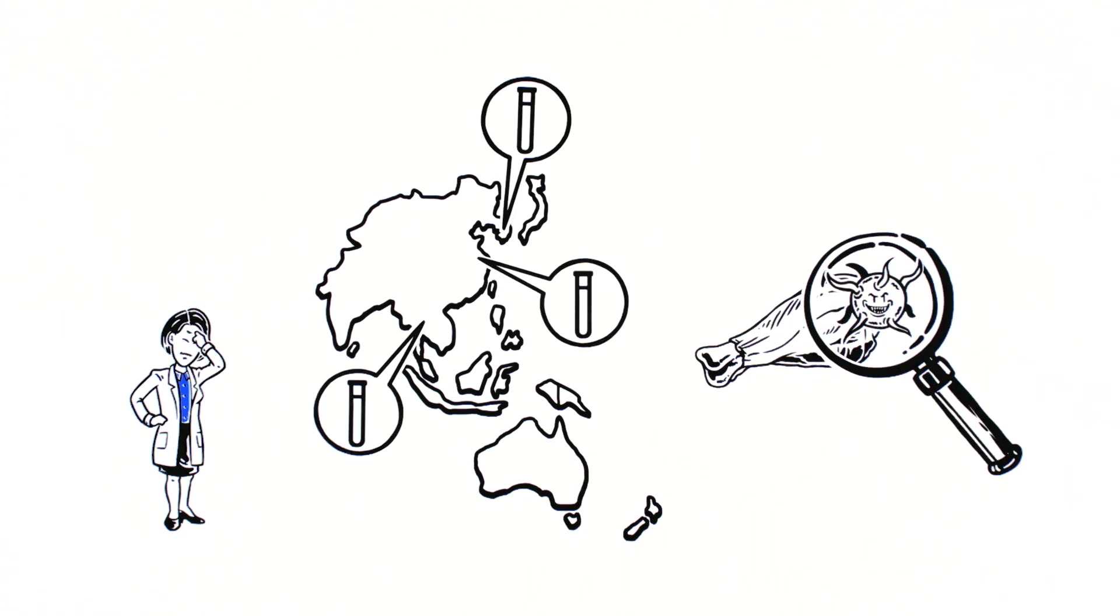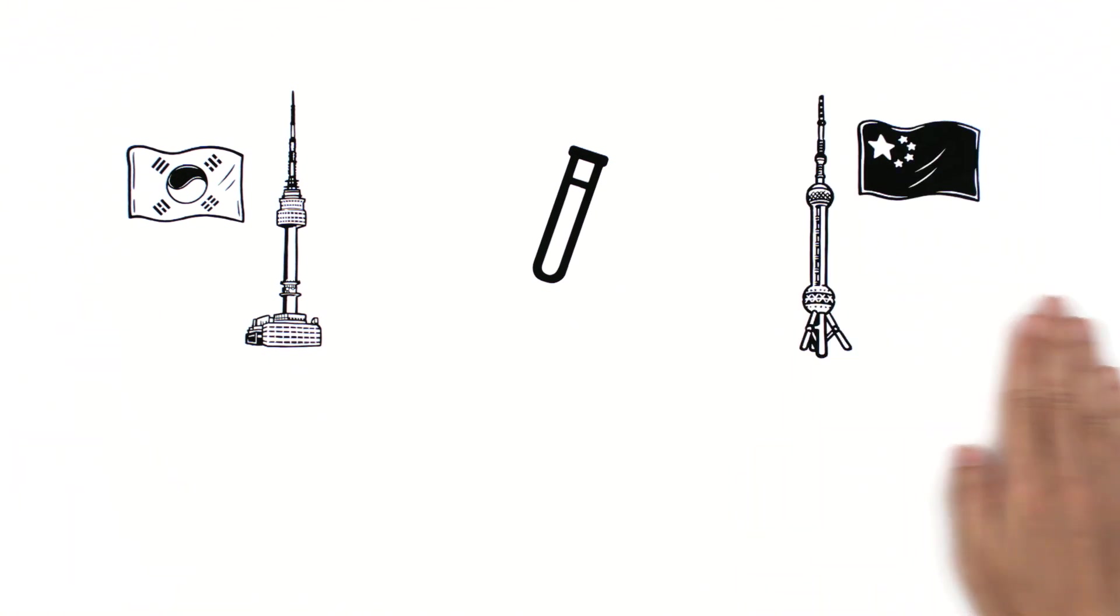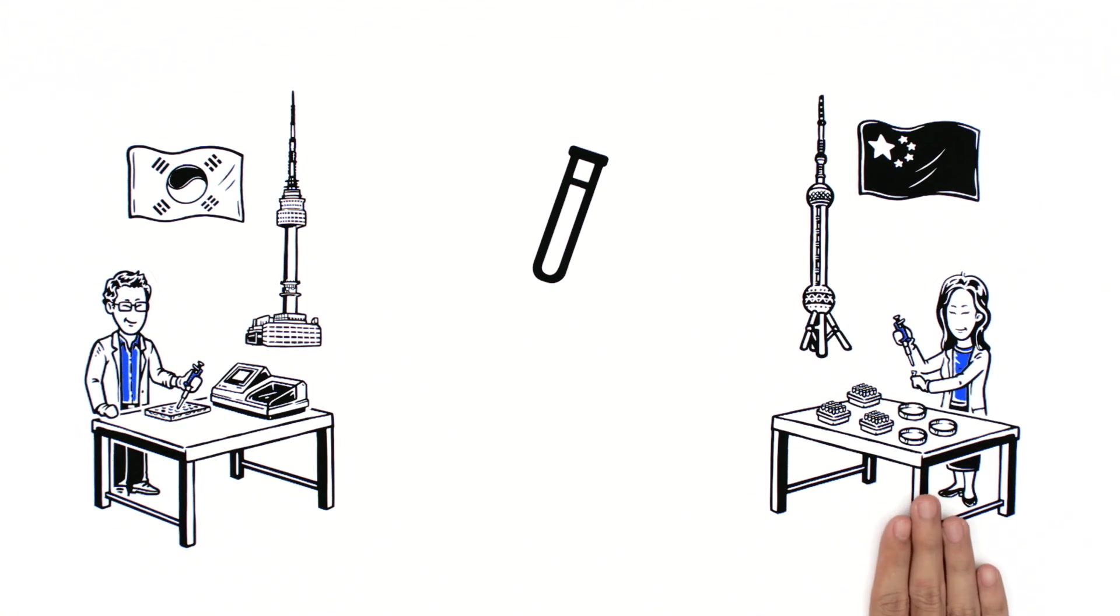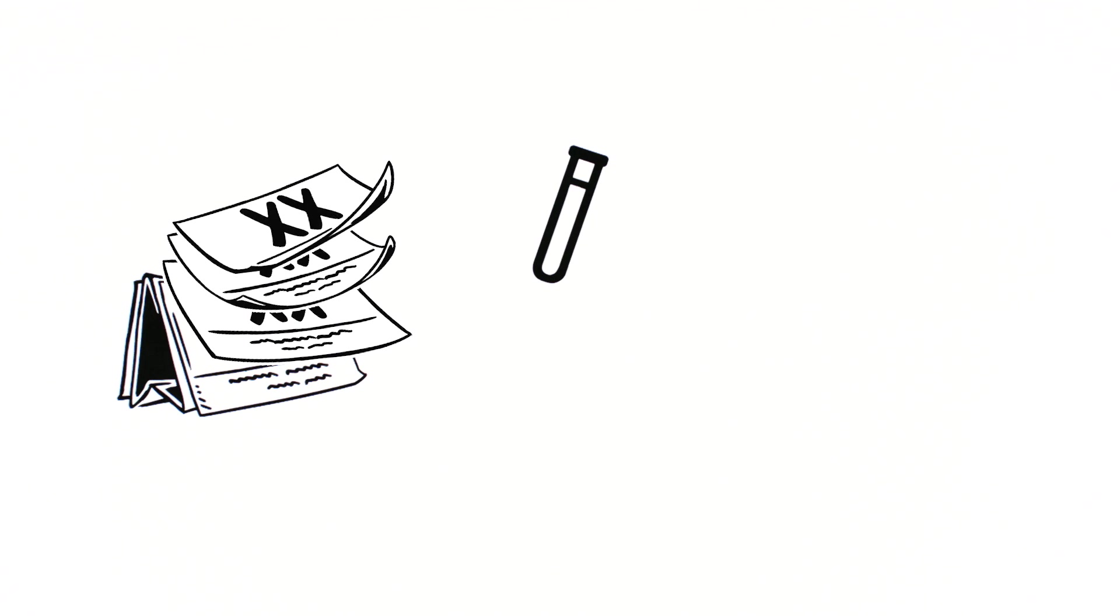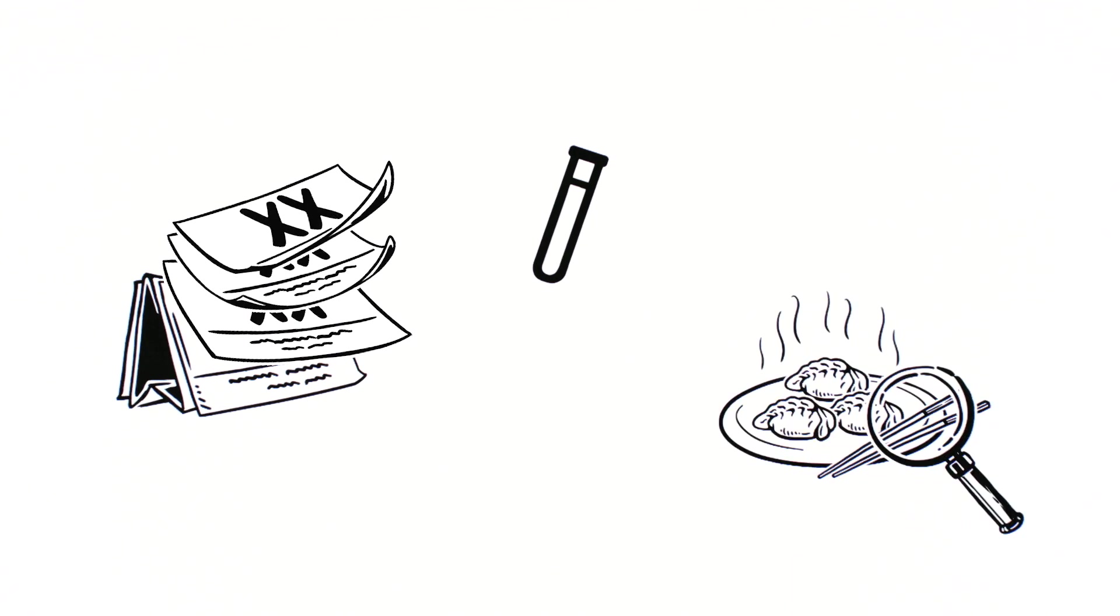She wonders if there's a better way than the current methods used. With labs in Korea and Shanghai using ELISA and traditional methods of testing, results take two to three days. When it comes to food pathogen testing, this can be too long.